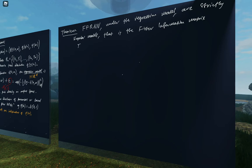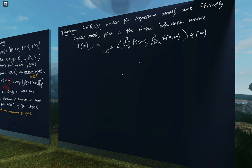Strictly singular means they have a degenerate Fisher information matrix. The Fisher information matrix, which Edmund spoke about last week, has a degenerate form once you carry out the calculations. A strictly singular model is one in which the Fisher information matrix is degenerate — at least, that is the interesting case. The upshot is that singular learning theory is necessary to understand the statistical properties of feedforward ReLU neural networks and most other neural networks.